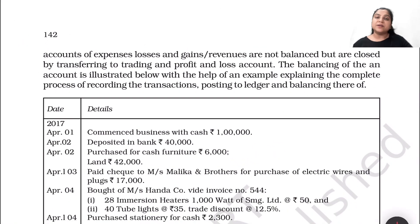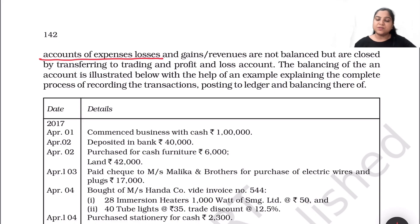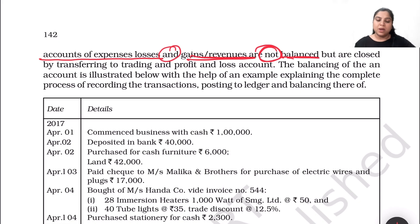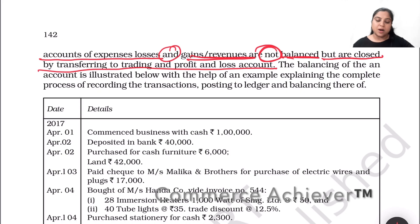So, we have seen all accounts — the total and the balance will be transferred. Accounts of expenses, losses, gains, and revenues are not balanced but are closed by transferring to the trading and profit and loss account, that is, the P&L account.